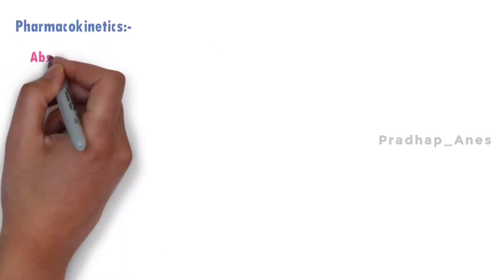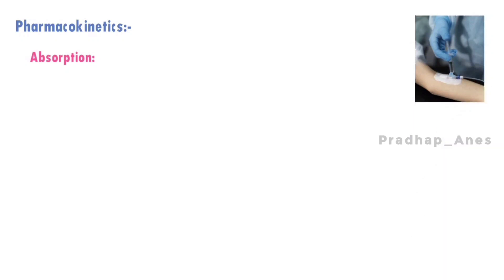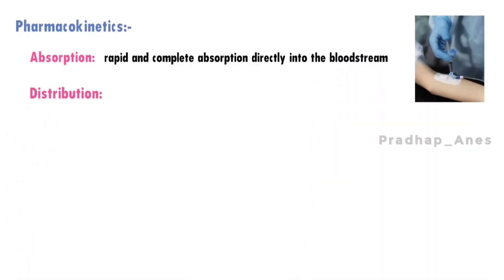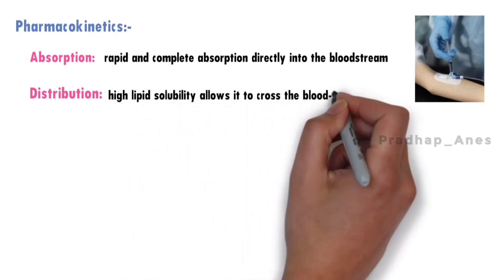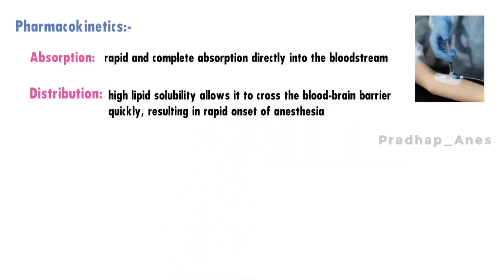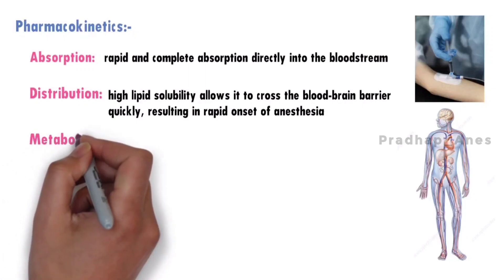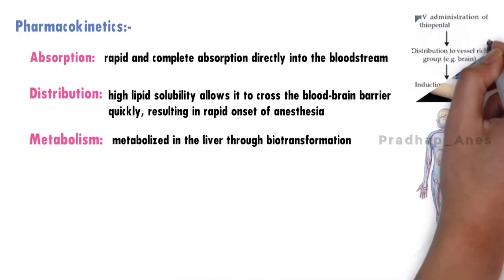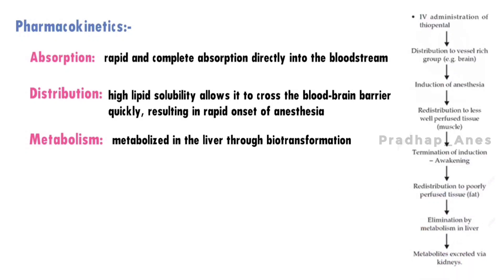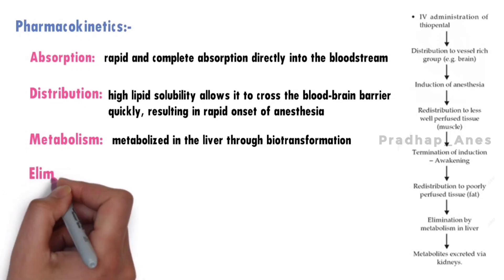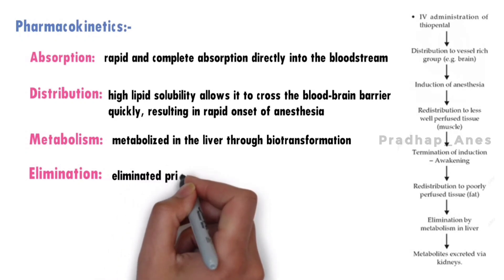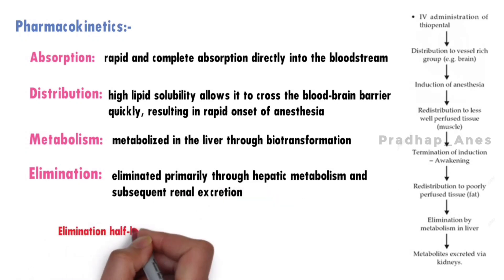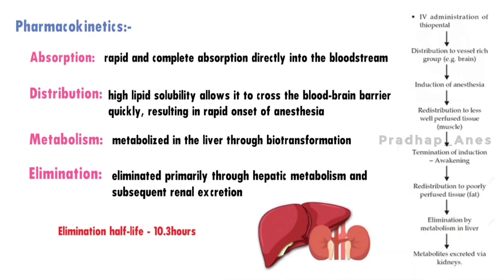Pharmacokinetics — Absorption: Thiopentone sodium is administered intravenously, allowing for rapid and complete absorption directly into the bloodstream. Distribution: Once in the bloodstream, it distributes rapidly throughout the body, including the brain and other highly perfused tissues. Its high lipid solubility allows it to cross the blood-brain barrier quickly, resulting in rapid onset of anesthesia. Induction is achieved in one arm-brain circulation time of approximately 15 seconds. Metabolism: It is primarily metabolized in the liver through biotransformation, with relatively fast metabolism resulting in a short duration of action. Elimination: It is eliminated primarily through hepatic metabolism and subsequent renal excretion, with an elimination half-life of around 10.3 hours. Clearance can be affected by hepatic or renal impairment.